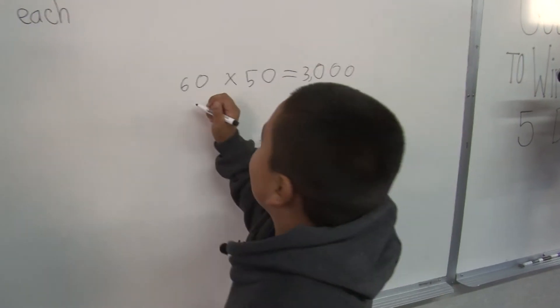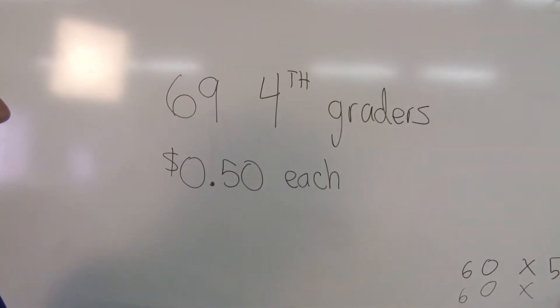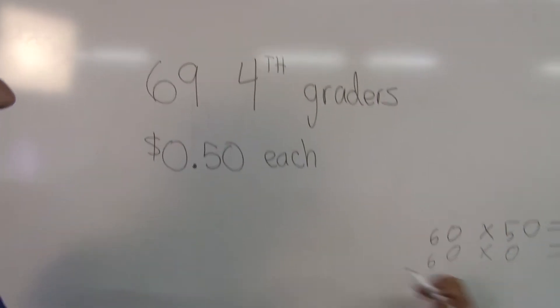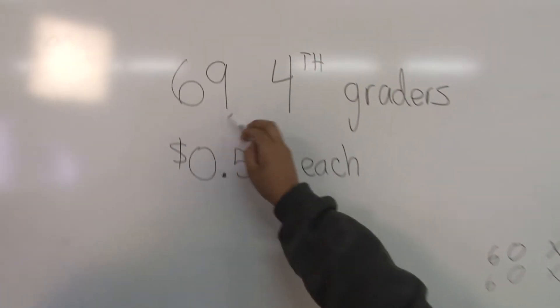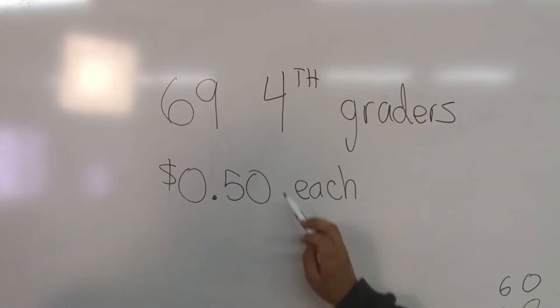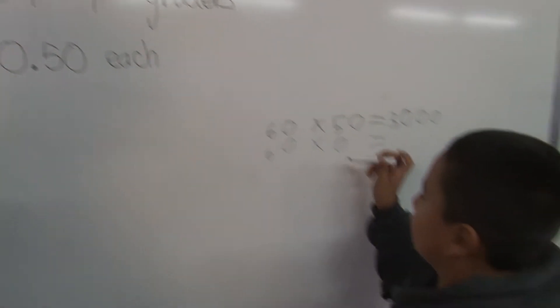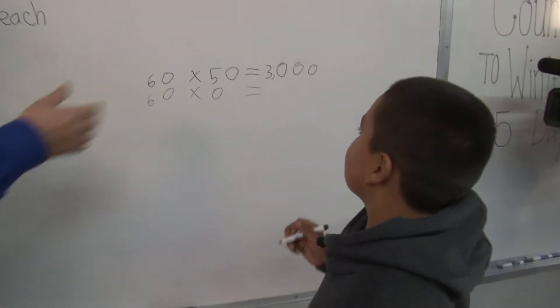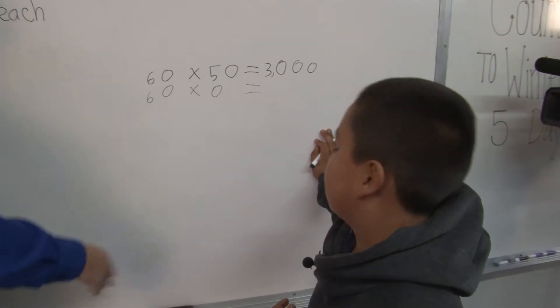And then I grab the 60 and I put it right here, and I put zero. So I'm getting the 60, putting the zero, and get the number on the other one. So if we do 60 times zero, what will that be? Zero. Do we even need to write it up there? No. Let's erase it.